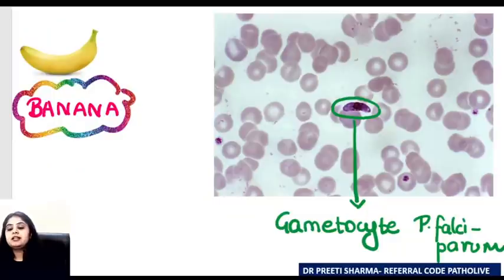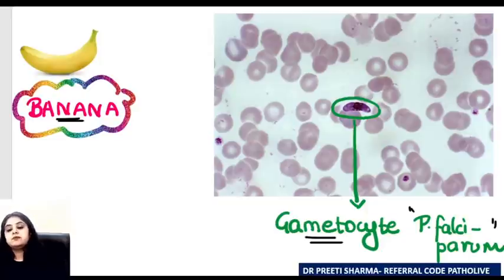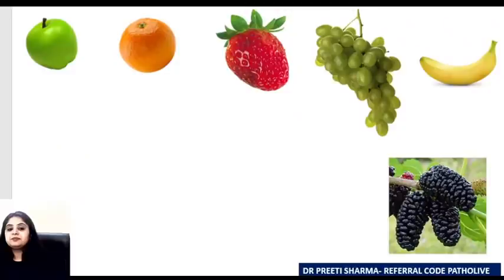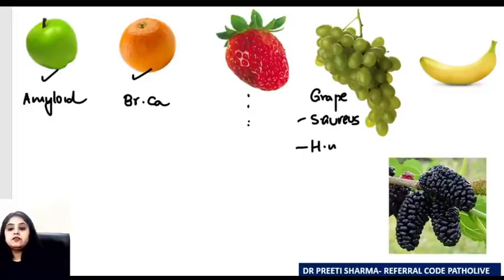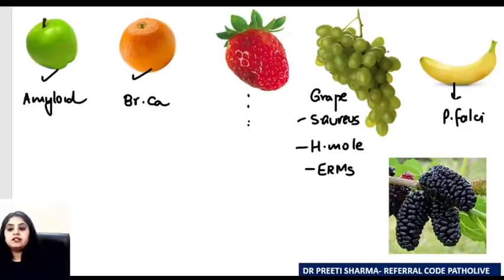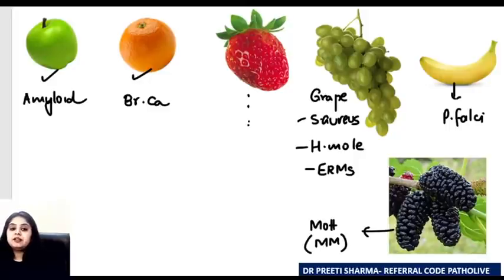The last fruit is banana. Everyone knows banana-shaped gametocytes are seen in Plasmodium falciparum. Summary of fruits: apple green birefringence for amyloid; peau d'orange for breast cancer; a long list of strawberry appearances; grape-like clusters for Staphylococcus aureus in microbiology; hydatidiform mole and embryonal rhabdomyosarcoma in pathology; banana-shaped gametocytes for Plasmodium falciparum; and Mott cells in multiple myeloma.